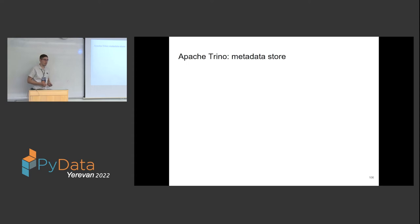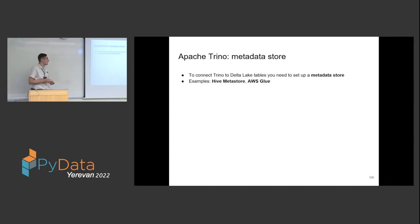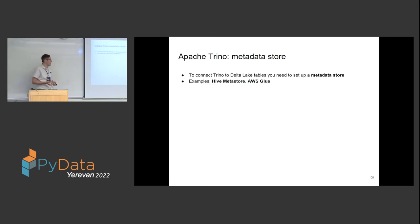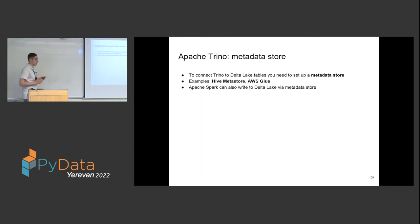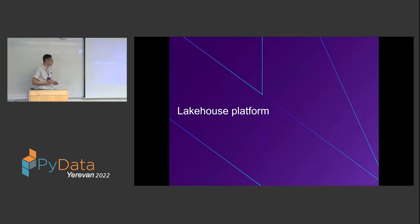There is one important aspect to cover: to glue Delta Lake and Trino together, we need a metadata store. Examples you may be familiar with are Hive Metastore or AWS Glue. Apache Spark is also able to write and read Delta Lake and other formats like Parquet via a metadata store — when connected to a metadata store, you can specify a table name rather than an exact path.